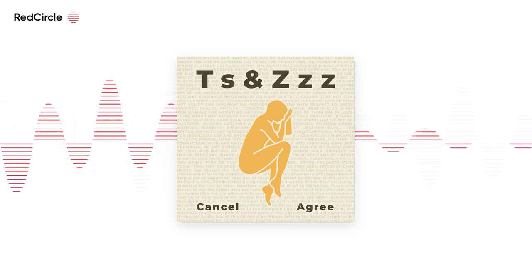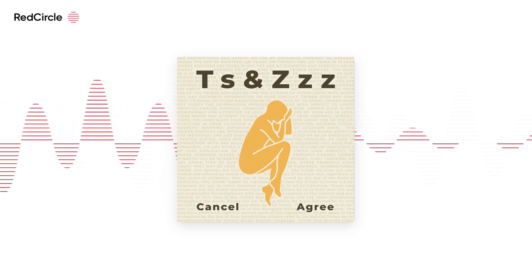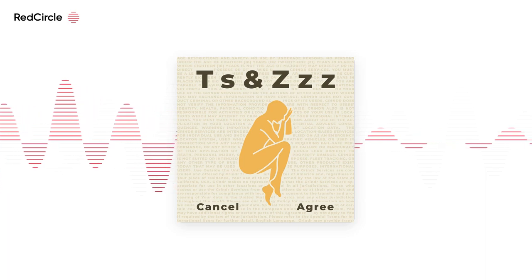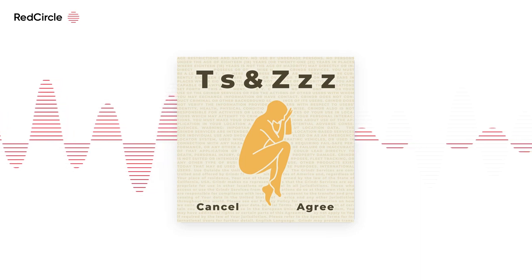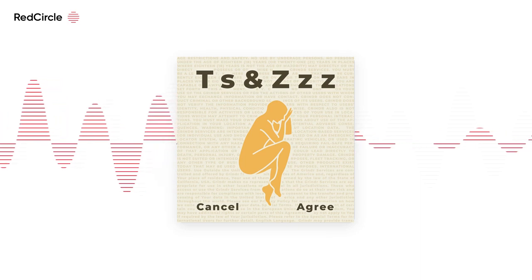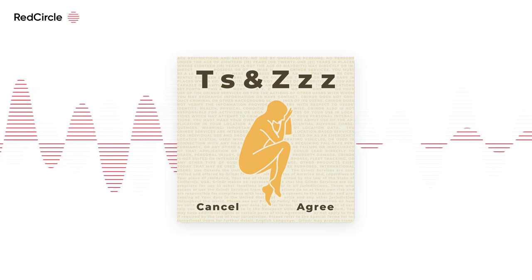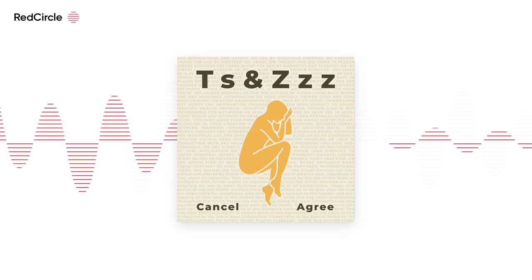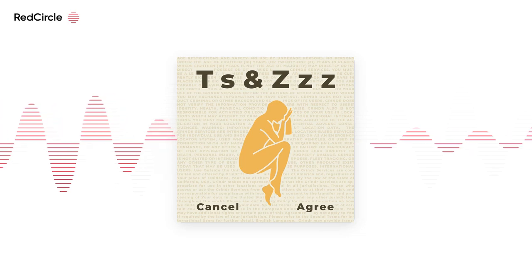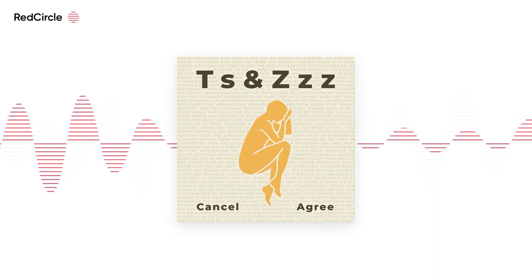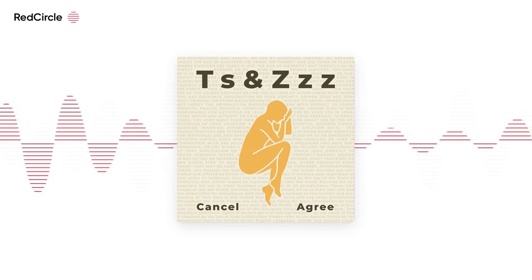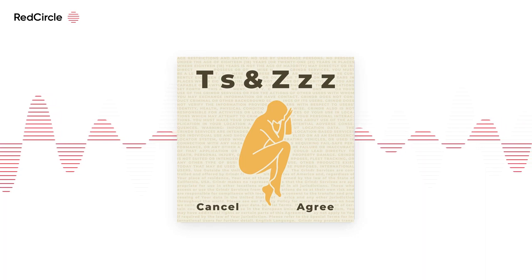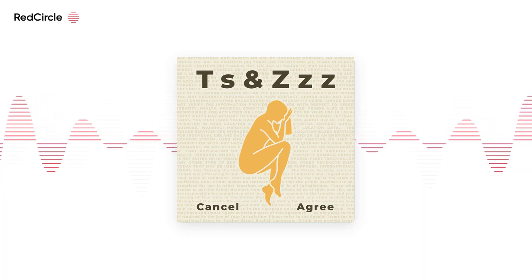8.3 Tax Information. In certain jurisdictions, tax regulations may require that we collect and or report tax information about you or withhold taxes from payouts to you, or both. If you fail to provide us with documentation that we determine to be sufficient to support any such obligation to withhold taxes from payouts to you, we may withhold payouts up to the amount as required by law until sufficient documentation is provided. You agree that Airbnb may issue on your behalf invoices or similar documentation for VAT, GST, consumption, or other taxes for your host services to facilitate accurate tax reporting by you, our guests, and or their organizations.